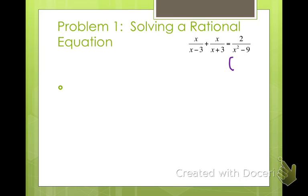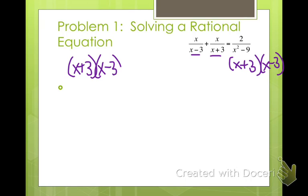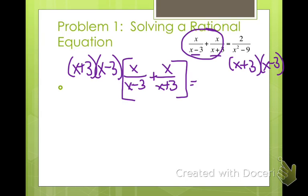So x squared minus 9 factors into x plus 3 and x minus 3. And here over on the left we have x plus 3 and x minus 3 as our factors. So x plus 3, x minus 3 is what we're going to multiply both sides by. So x plus 3, x minus 3 times everything on the left side: x over x minus 3 plus x over x plus 3 equals 2 over x plus 3, x minus 3 times x plus 3.